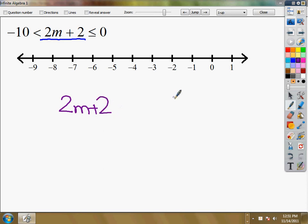In fact, it might be easier for me if I just wrote that down twice. 2m plus 2 and 2m plus 2. And I'm going to write down one end and then I'll go down and write down the other end. From here, I'm just solving equations.